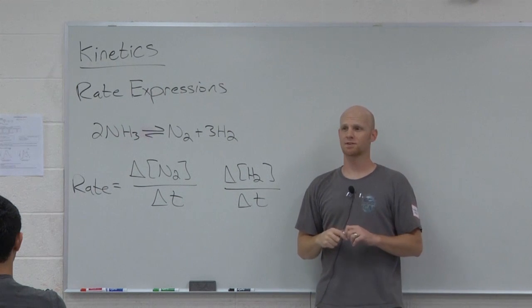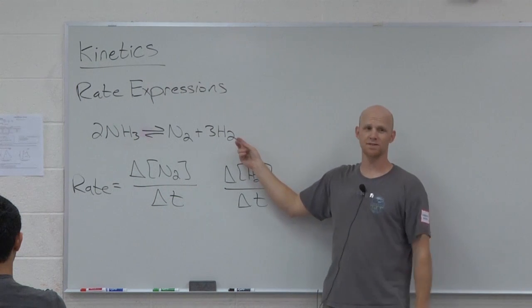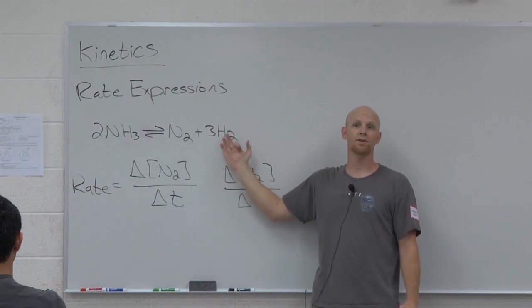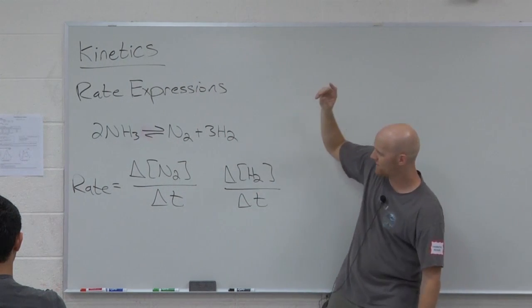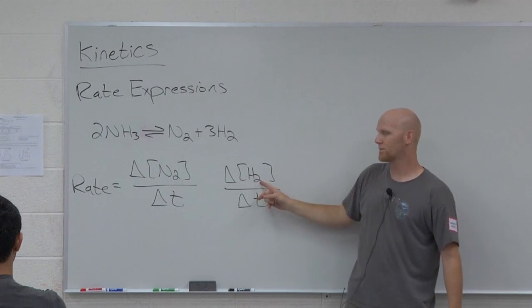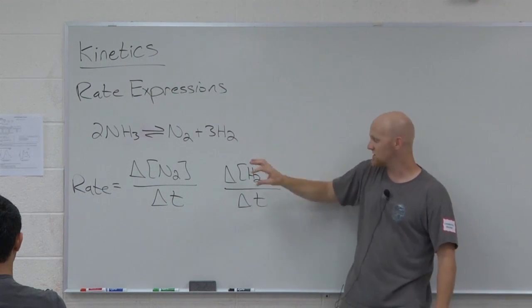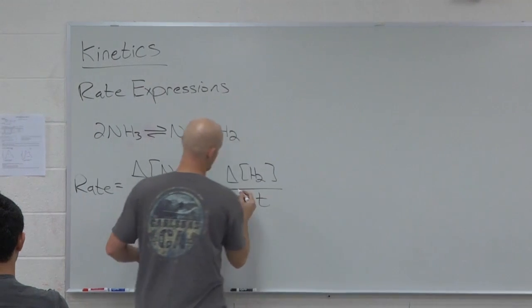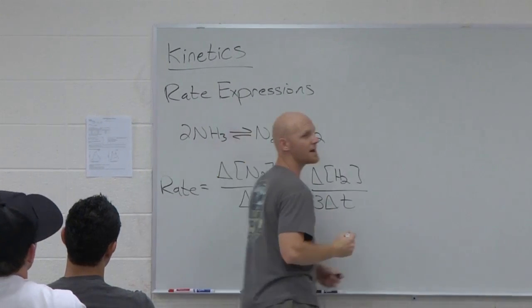Are nitrogen and hydrogen produced at the same rate? No. Which one's produced faster? Hydrogen. How many times faster? Three times faster. For every one nitrogen molecule, I get three hydrogen molecules. It's produced three times faster. And so if I call this the rate, well, this can't be also the rate because they're two different numbers. This is three times bigger than this quantity right here.